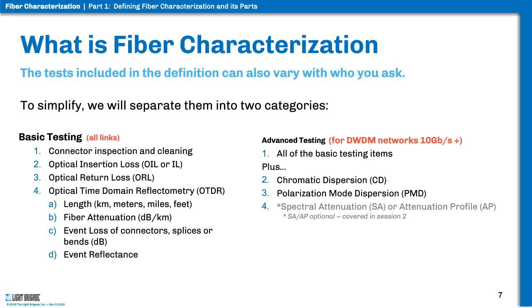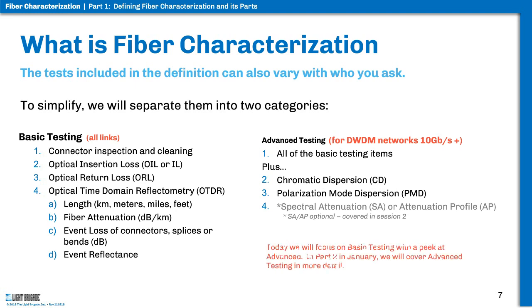Spectral attenuation, shown grayed out at the bottom, is a measurement that is a variant on insertion loss testing but actually measures over a range of wavelengths, such as over the C-band. We're going to get into the advanced side in part two in January, but today we're really going to focus on the basic testing — the stuff on the left side.